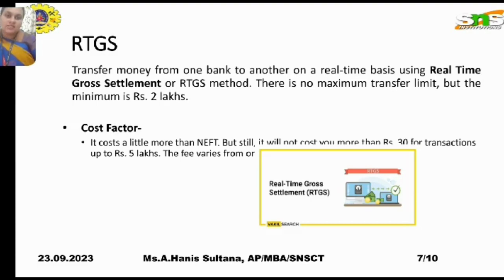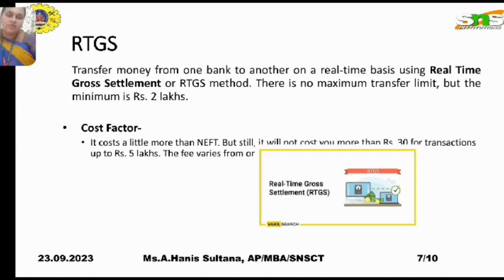The second type of EFT is RTGS — Real-Time Gross Settlement. This is also a method where transfer can be made online, but the major difference between NEFT and RTGS is that for NEFT there is no minimum transaction limit per day, whereas for RTGS the minimum transfer amount is 2 lakhs.